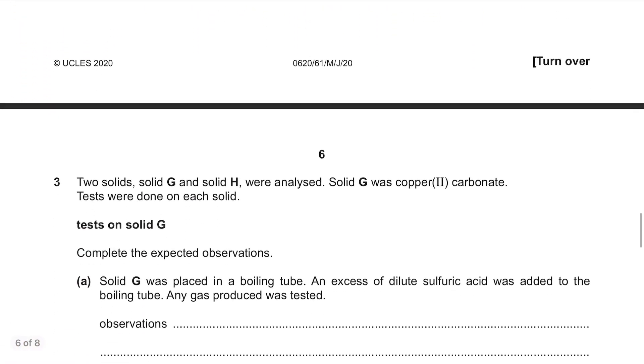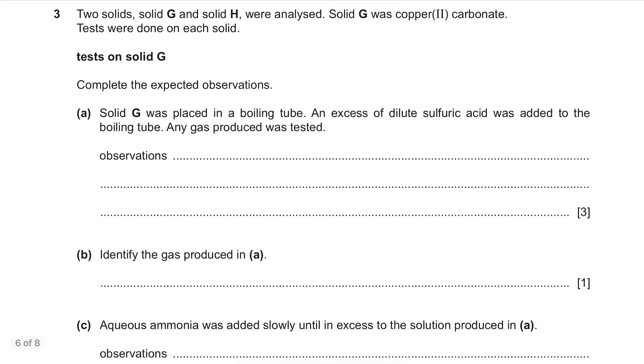Question 3. Two solids, solid G and solid H were analysed. Solid G was copper carbonate. Tests were done on each solid. Tests on solid G. Completely expected observations. I hope you have memorised all the tests and their results. Part A. Solid G was placed in a boiling tube. An excess of dilute sulfuric acid was added to the boiling tube. Any gas produced was tested.